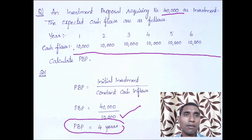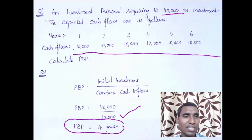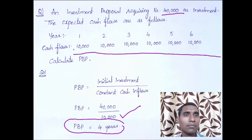To summarize today's session: we covered the techniques of capital budgeting — traditional methods (payback period and ARR) and modern discounted methods (NPV, IRR, profitability index, and discounted payback period). We studied the definition and decision criteria for payback period and its formulas, and solved a Case 1 problem. In the next session we will work on payback period problems based on Case 2. Good day, goodbye.